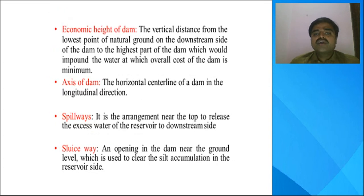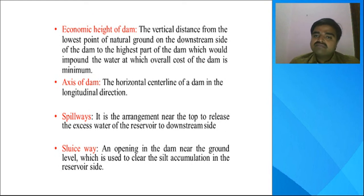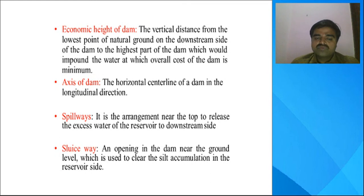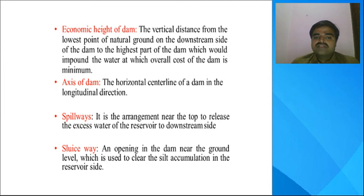The next term is the economic height of the dam. In simple terms, it is the vertical distance from the lowest point of natural ground on the downstream side to the highest part of the dam at which the overall cost of the dam is minimum. The next term is the axis of the dam — the horizontal centerline of a dam in the longitudinal direction.